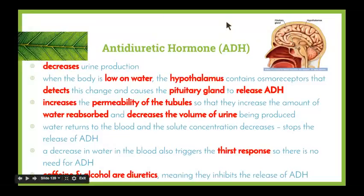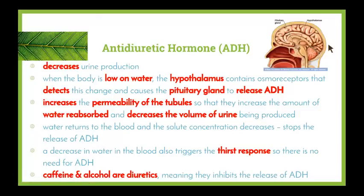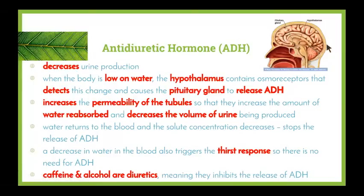Antidiuretic hormone's job is to decrease urine output. When the body is low on water, the hypothalamus, a tiny section of the brain, contains osmoreceptors that detect changes and cause the pituitary gland to release ADH. The ADH then increases the permeability of the tubules in the nephron so that they increase the amount of water reabsorbed and decrease the volume of urine produced. Water returns to the blood, solute concentration decreases, and the hypothalamus detects this and stops the pituitary gland from releasing ADH.